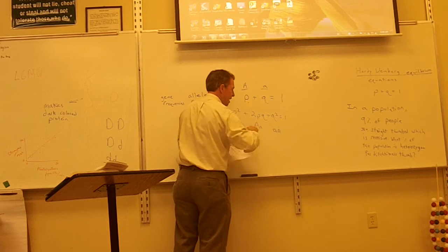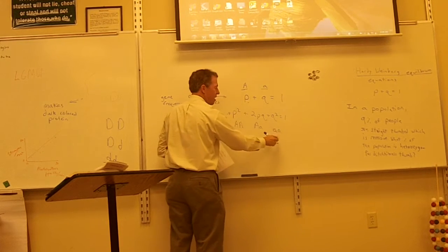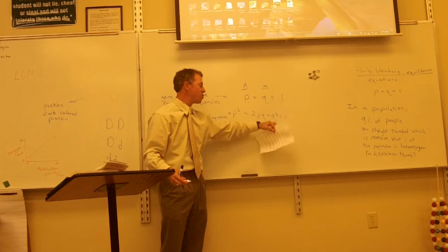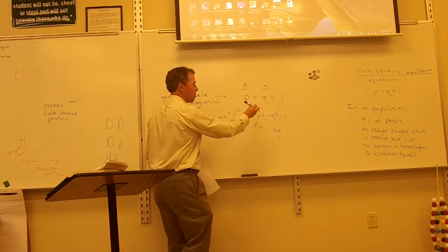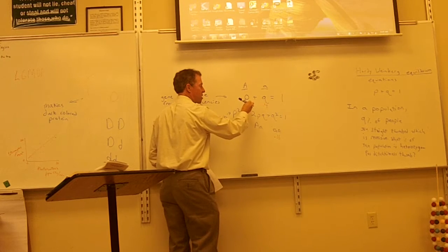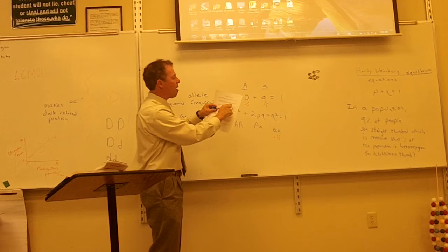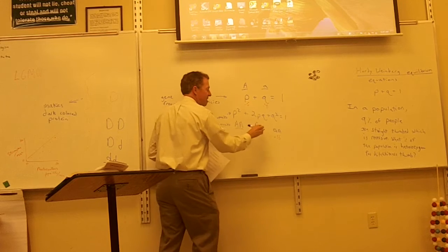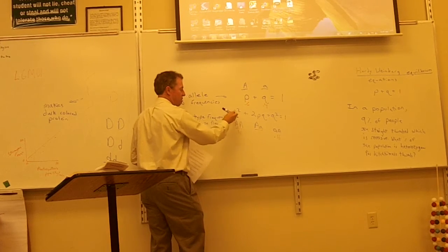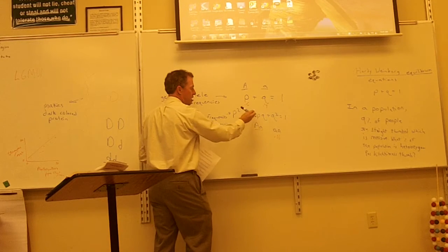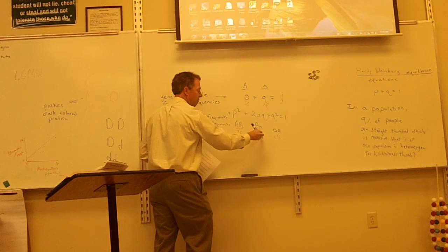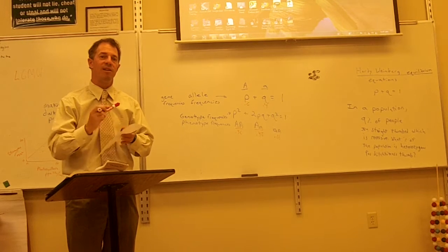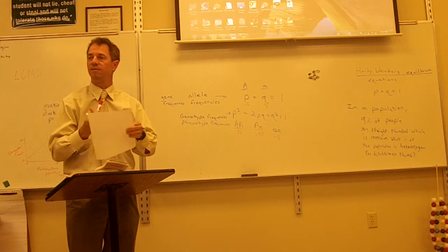So .16 is little a, little a. 16% are little a, little a, so Q squared is .16. Can you figure out what Q is in your head without using the calculator? What times what is 16? .4. It's .4. So Q is .4. P is .6. And then it's asking what percentage would you expect to be homozygous dominant and heterozygous? So .36, that's what P squared is. Plus 2 times .6 times .4 is .48.